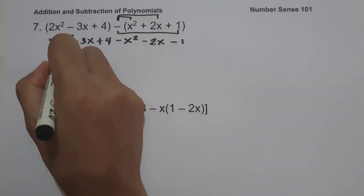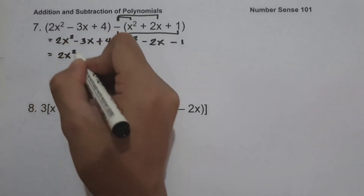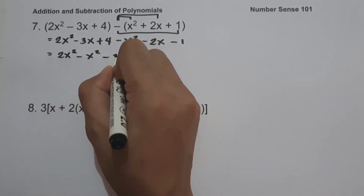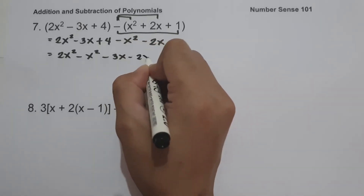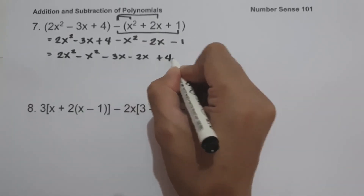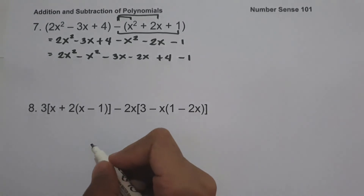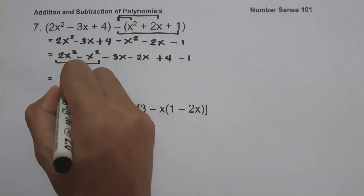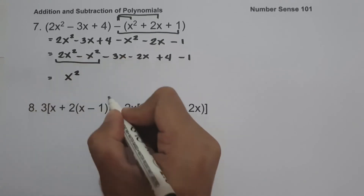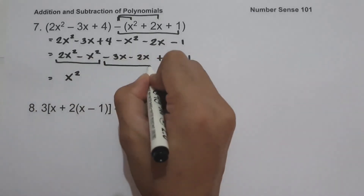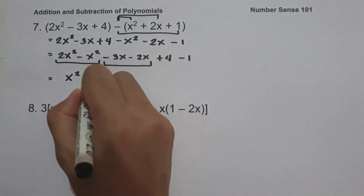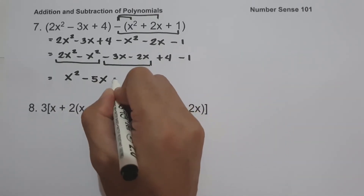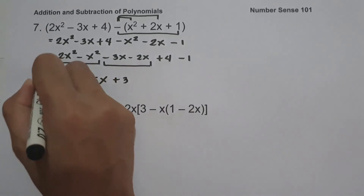So let us have 2x squared minus x squared, minus 3x minus 2x, plus 4 minus 1. We get 2x squared minus x squared is x squared, negative 3x minus 2x is negative 5x, and 4 minus 1 is 3. And this will be our answer.